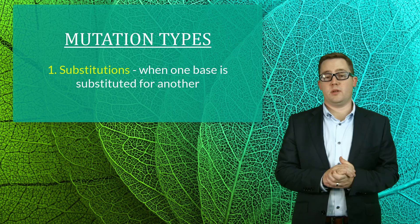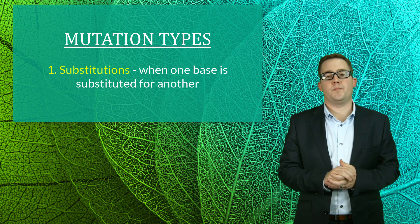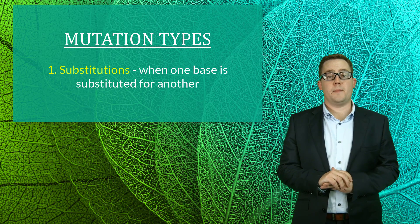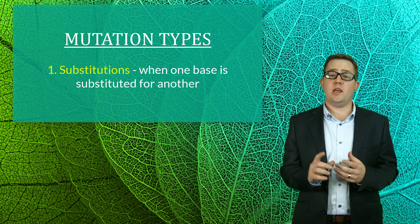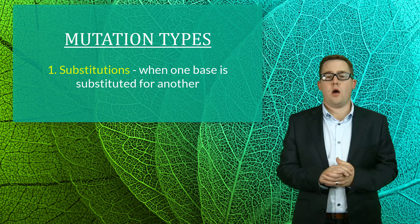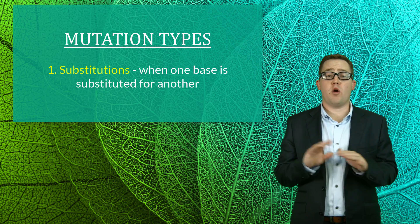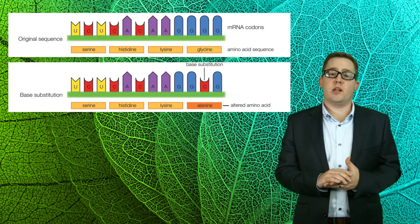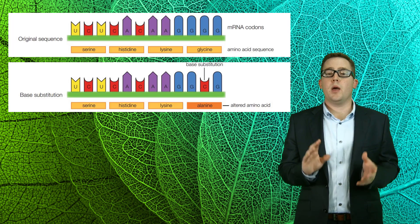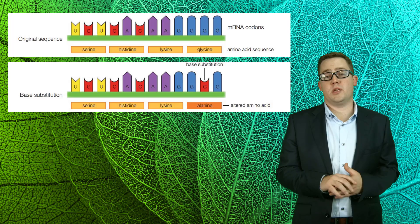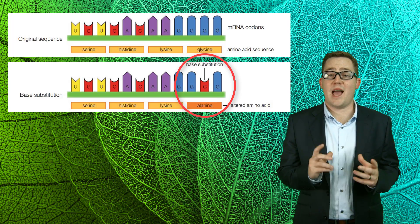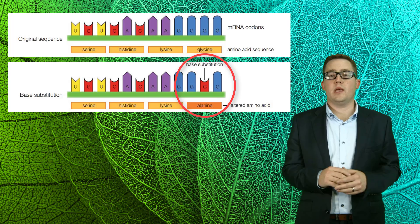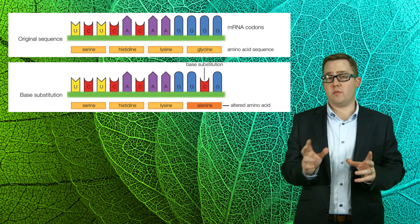Now let's take a look at some of the different types of mutations — there are three that you really should know. The first type are called base substitutions. These occur when one nucleotide is substituted for a different one. In most cases the worst case scenario is one wrong amino acid being coded for, though it is possible for this mutation to have no effect at all on the resulting polypeptide. In this example we can see an original sequence of DNA with no mutation, and below it the same sequence with a substitution mutation — the base G has been substituted with a C. In this case the new codon will code for alanine instead of glycine as before. This change in amino acid may or may not affect the overall resulting protein.